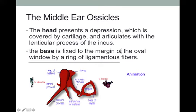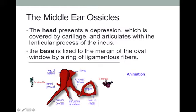The base of the stapes is fixed to the oval window, where it gently articulates. One significant condition affecting this junction is otosclerosis, where there is a spongy, bony growth. Otosclerosis may run in families. Surgery for this condition typically involves removing the stapes and its abnormal bony growth and replacing it with a prosthesis — something we will touch on when we discuss disorders of the ear.